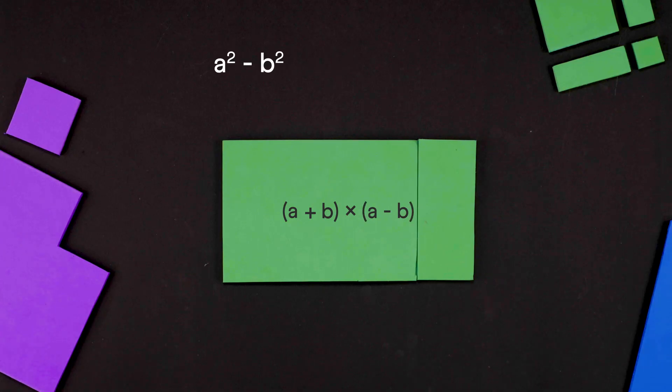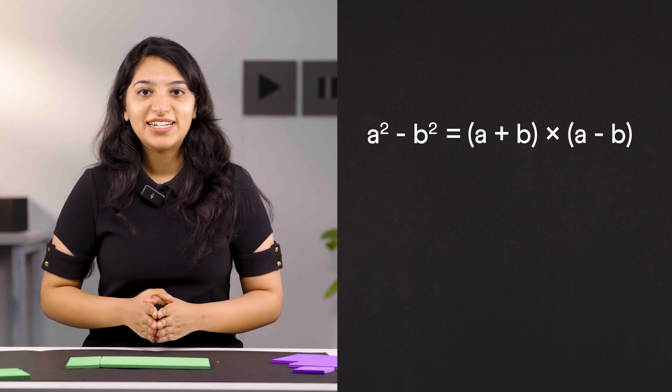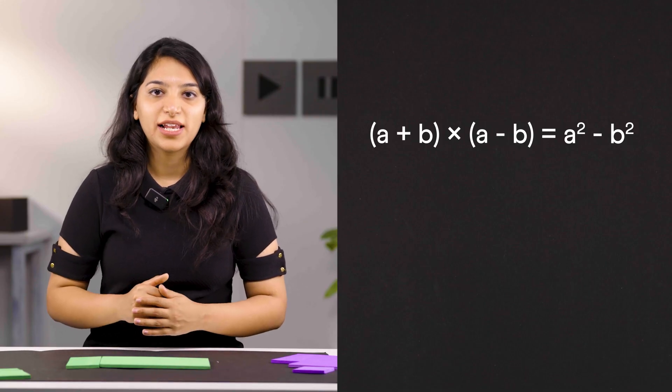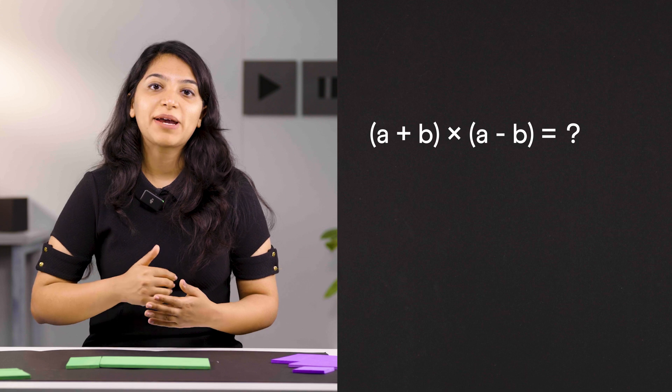a squared minus b squared equals a plus b times a minus b. We can verify this identity by going the other way around as well. What's a plus b times a minus b?